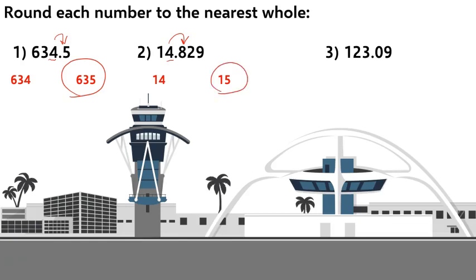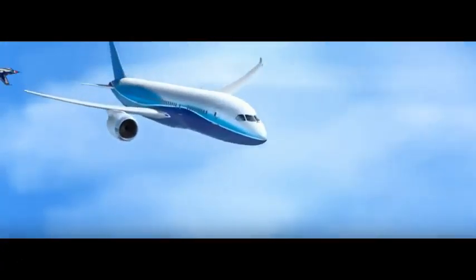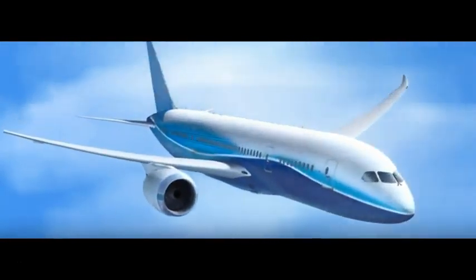And the last problem, 123 and 9 hundredths. That's between 123 and 124. If we look at the tenths place, we see a zero, which means it's less than halfway to the next number. So, it would round down to 123. And now you're ready to do these on your own. Good luck!